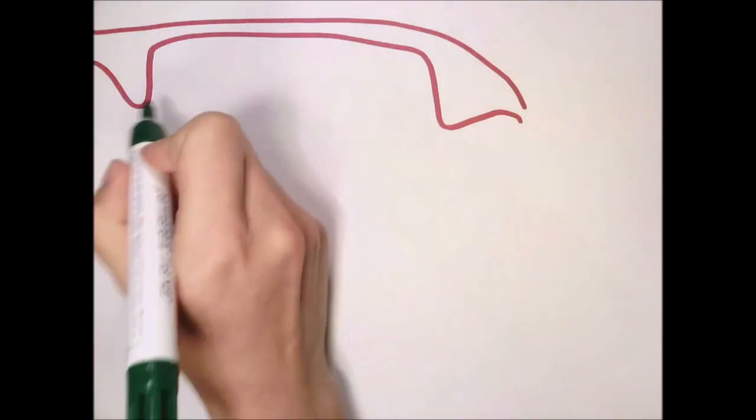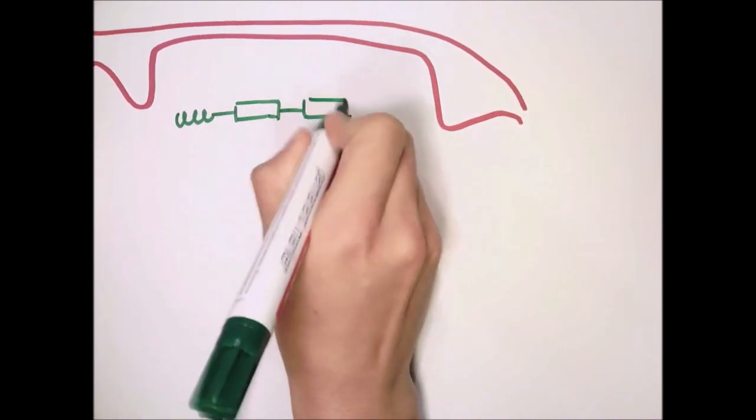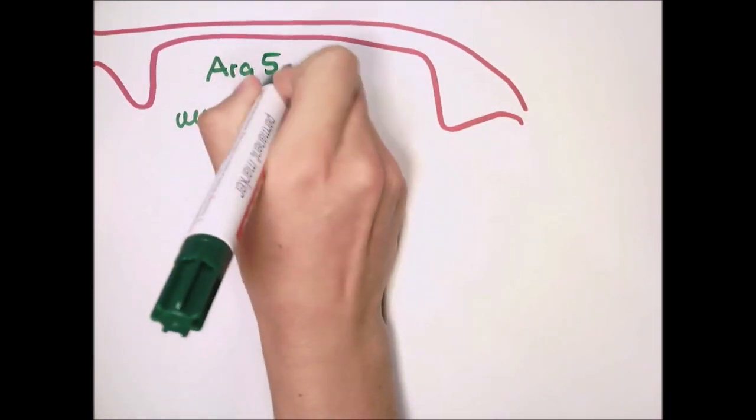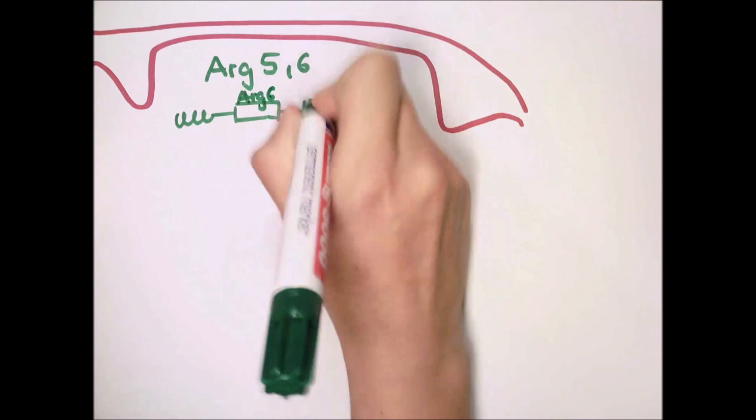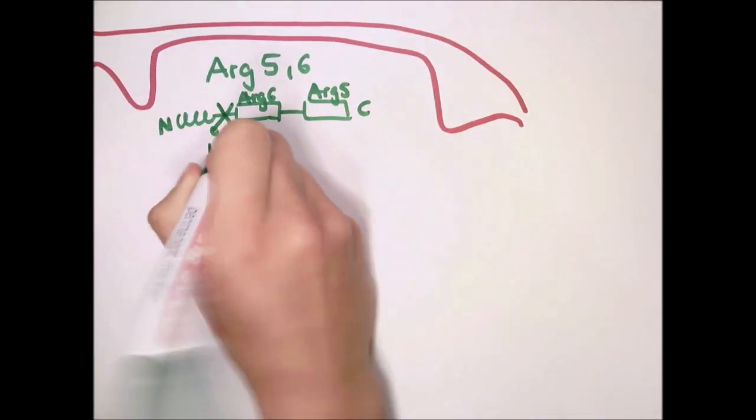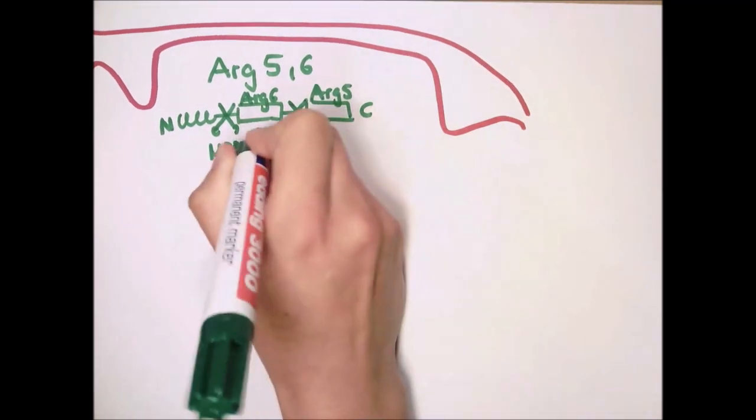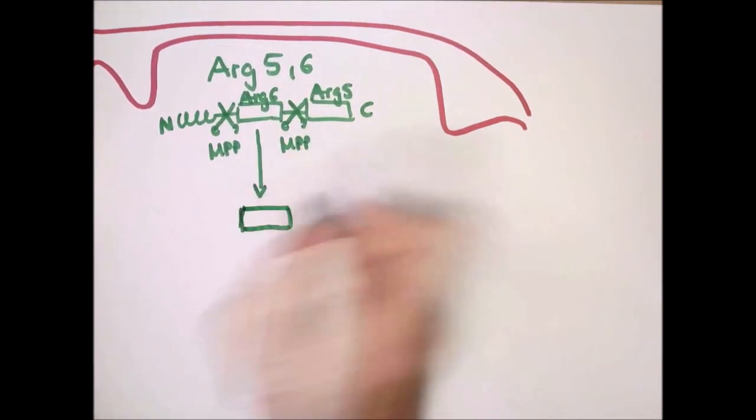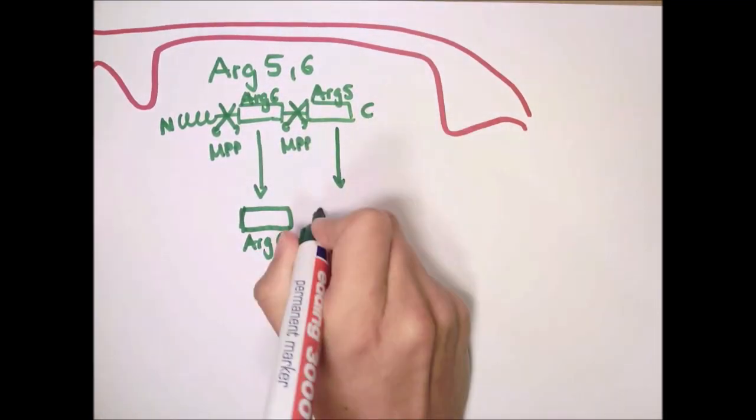For example, the yeast proteins ARG6 and ARG5 are synthesized concatenated as one precursor protein, called ARG5-6. In the mitochondrial matrix, MPP not only cleaves off the pre-sequence, but cuts ARG5-6 a second time, thereby separating ARG6 and ARG5.